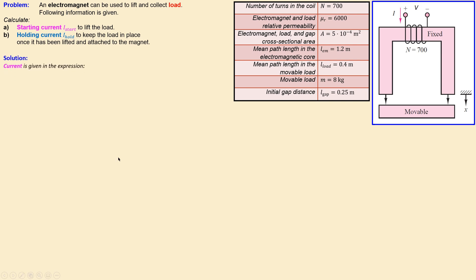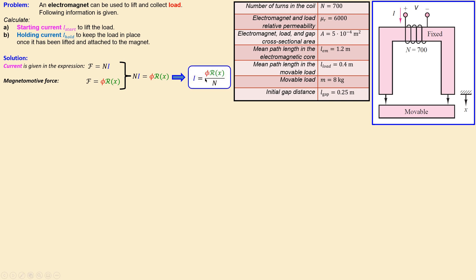The current is given by this expression for the magnetic system. The MMF is equal to the number of turns times the current. There is another formula for the magnetomotive force in terms of flux and also reluctance. In this case, the reluctance is a function of x because this distance can change. Combining these two equations, N times i equals flux times the reluctance. To calculate the current we get phi times reluctance over N. However, we don't know phi or the reluctance — the only given information is the number of turns, which is 700.